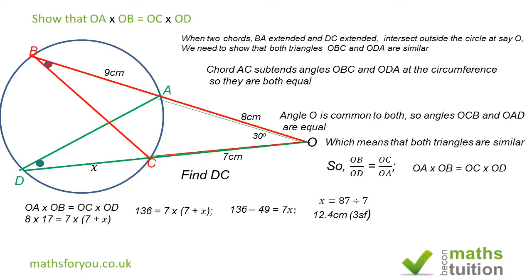Sometimes in an exam you are supposed to find the line BC, and you can use the cosine rule to find BC. Similarly, you can use the cosine rule to find DA, because by now we know the value of X.